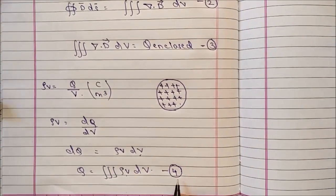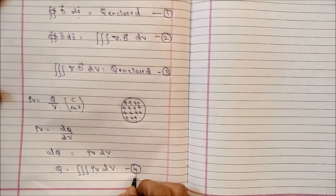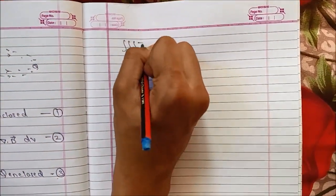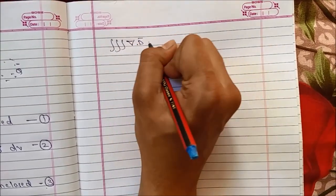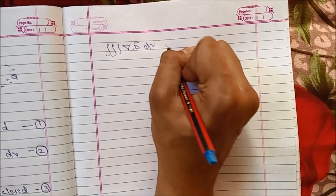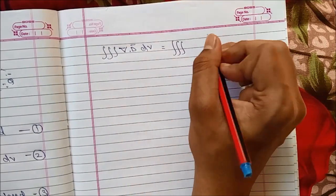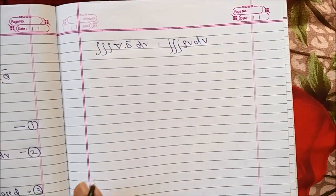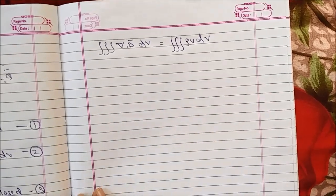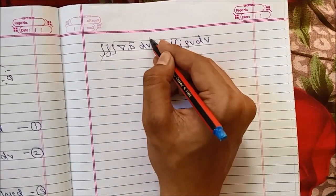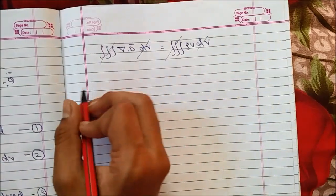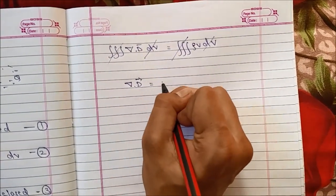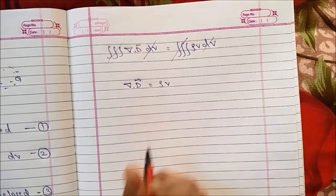Now I am substituting this equation four in equation number three, so we get the triple integration of rho_V dV on both sides. As both are identical and have volume integration, we can cancel them. So we get divergence of electric flux density is equal to volume charge density.